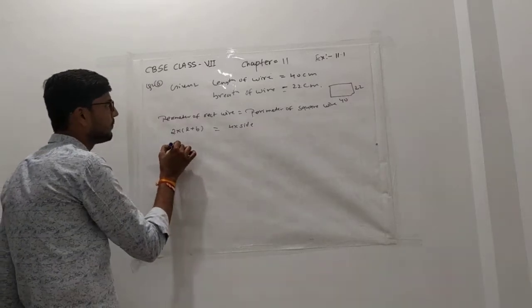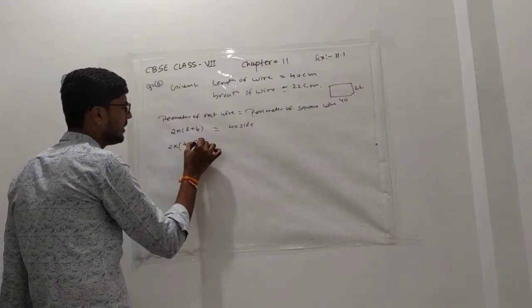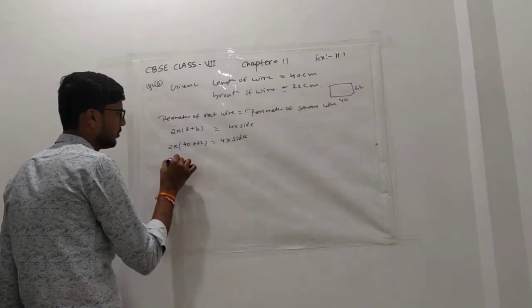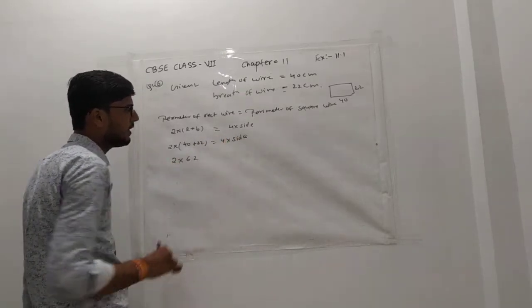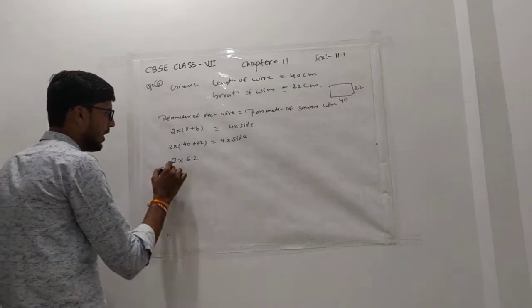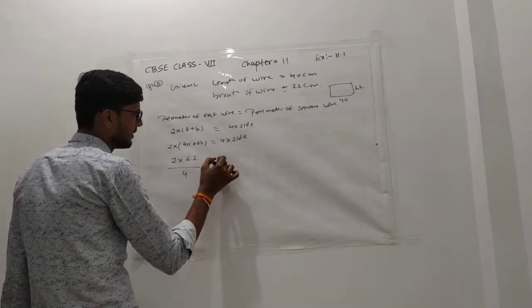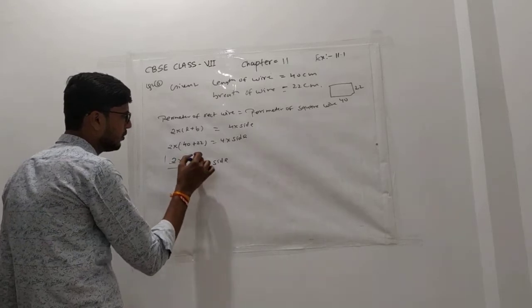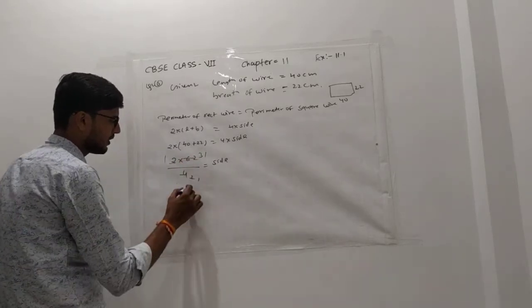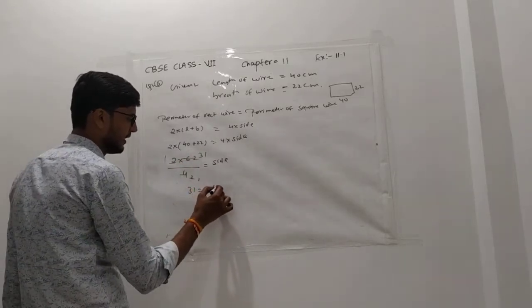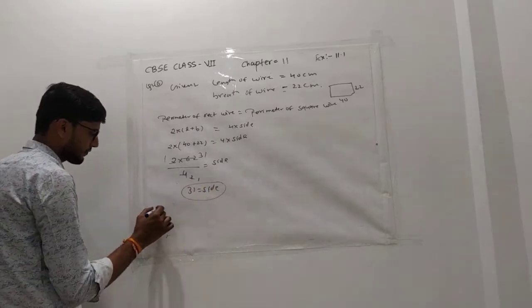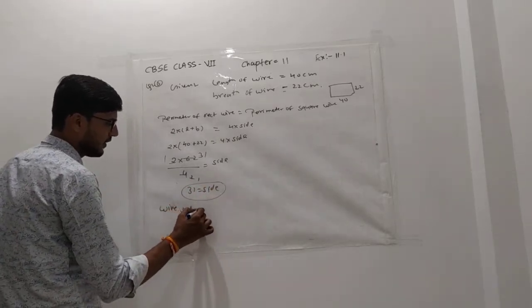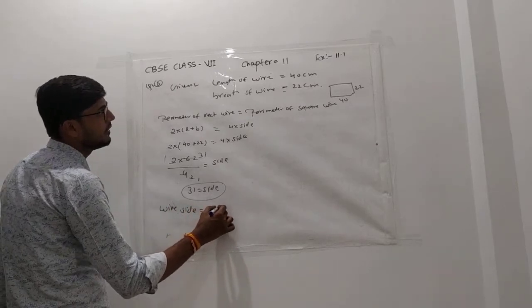So 2 × (40 + 22) = 4 × side. That gives us 2 × 62 upon 4 = side. So 124 ÷ 4 = 31. Therefore, side = 31 cm.